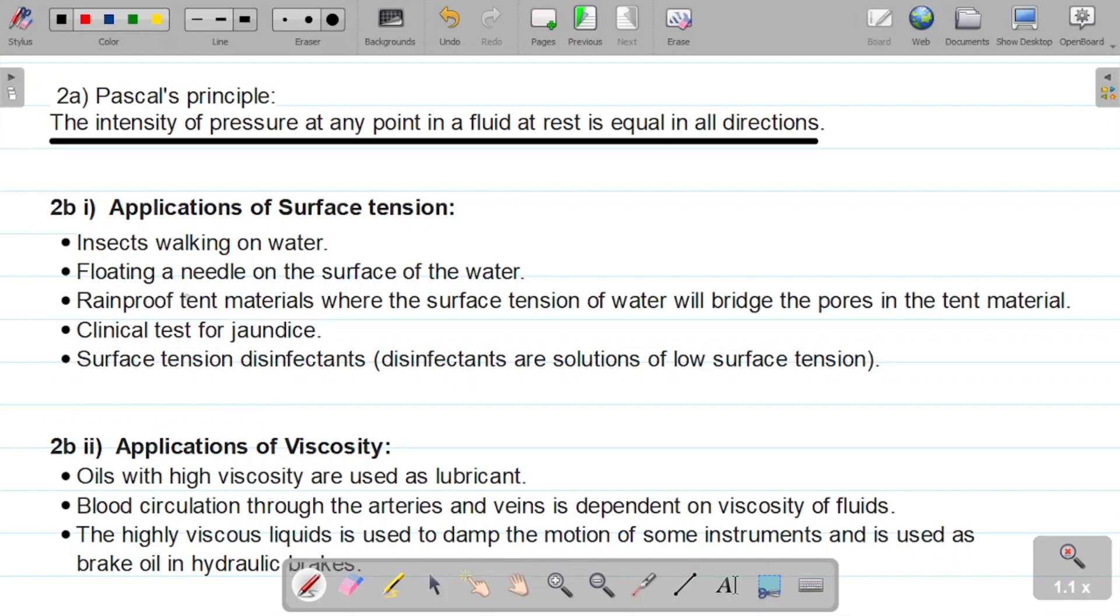2bi says state 2 applications of surface tension but I've given about 5 of them here. The first one is that insects are able to walk on water due to the presence or action of surface tension. Another thing is that floating of a needle on the surface of water is caused by surface tension.